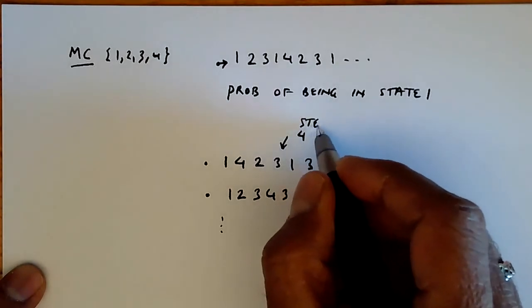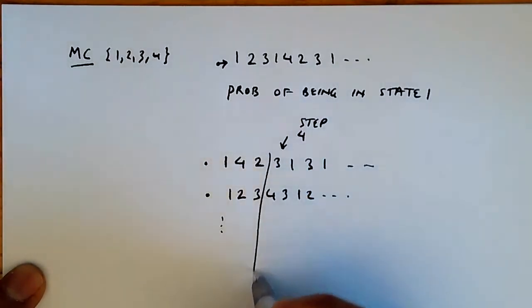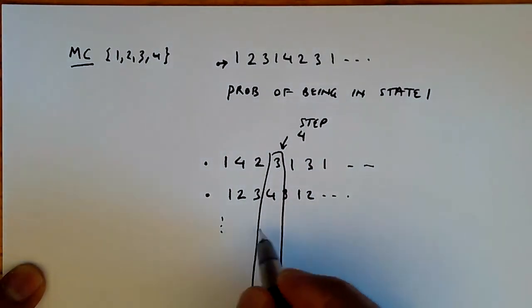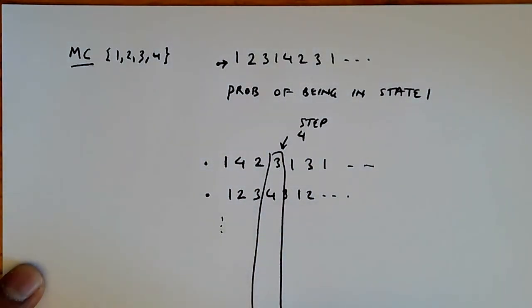And then I can look at which state is the Markov chain in across each of these infinite number of trajectories at step four. And we can say, okay, that is the probability of being in state one.